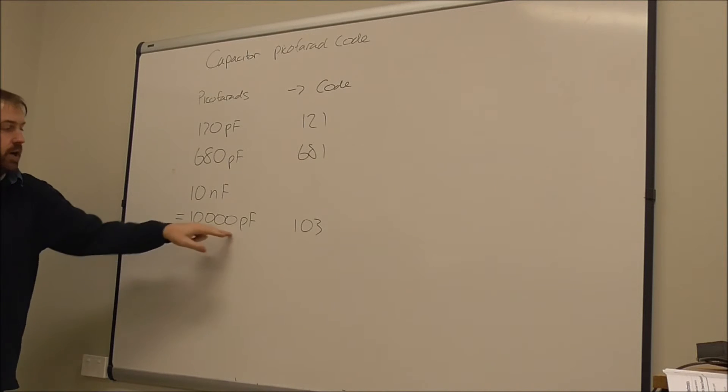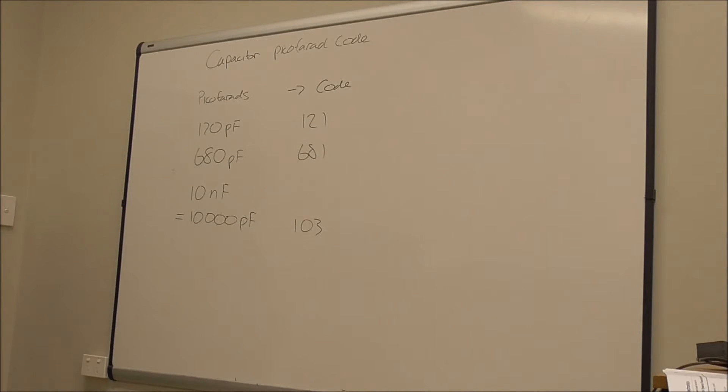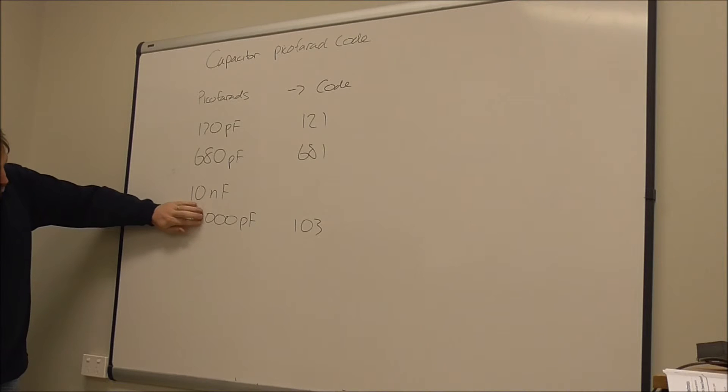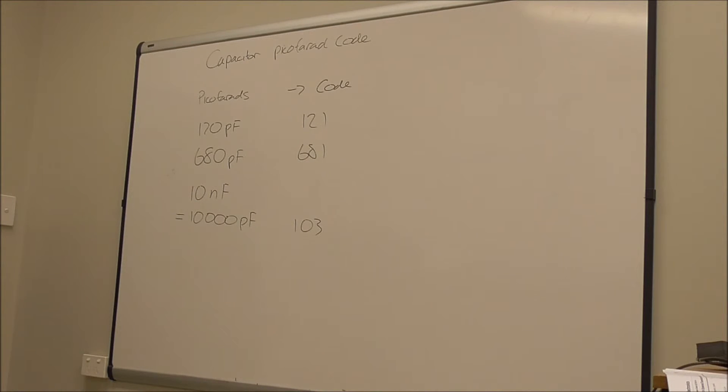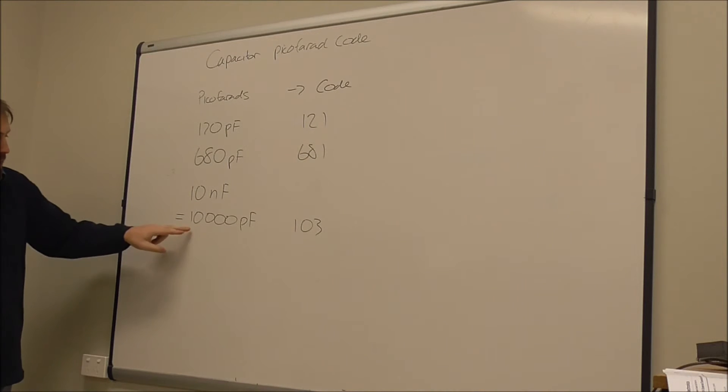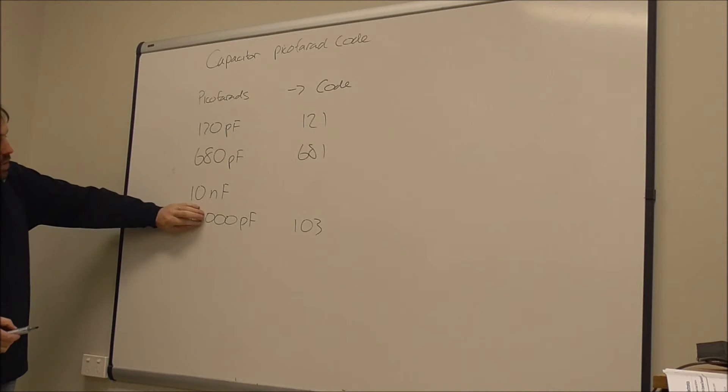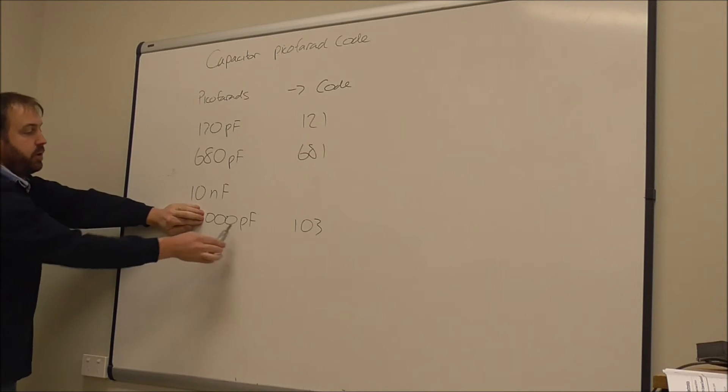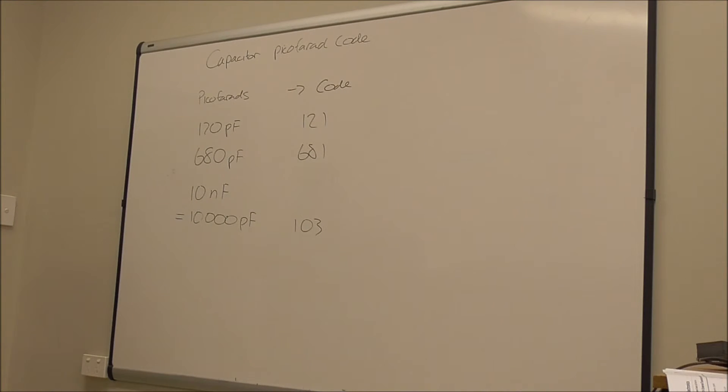Don't forget with ones like 10,000, where the first two digits are one and zero, you don't include that zero when counting additional zeros, because that's part of the first two digits. So after the first two digits, count how many zeros you've got.